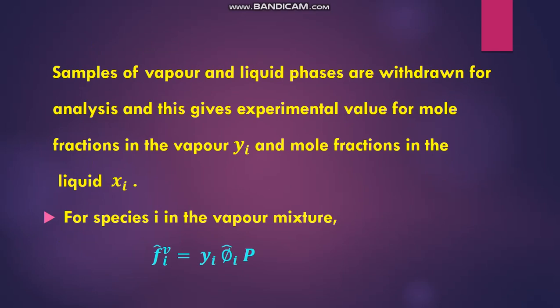Based on that analysis, we write for species i in the vapor mixture: the fugacity equation can be written as f̂_i^v = yi · φ̂_i · P. Here, fi represents the fugacity of component i, v represents the vapor mixture, yi is the composition, φ̂_i is the fugacity coefficient, and P is the pressure.